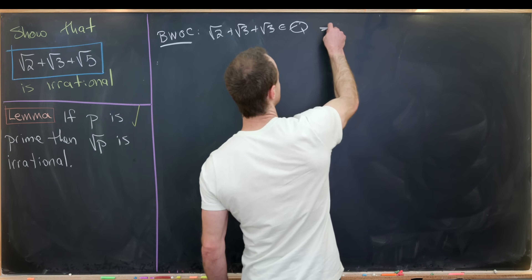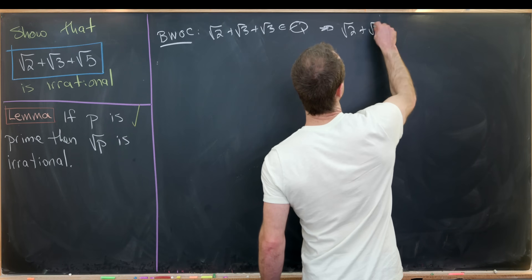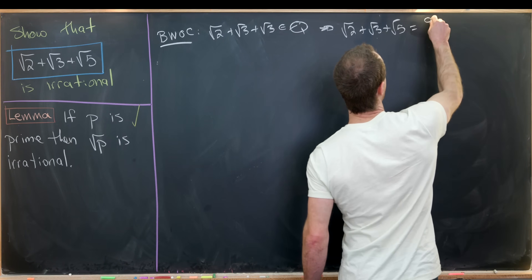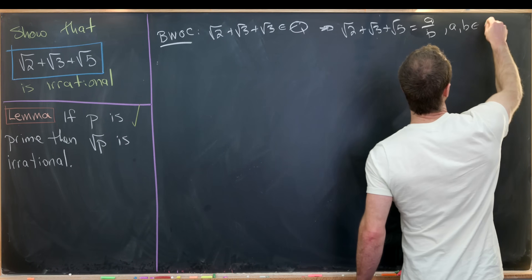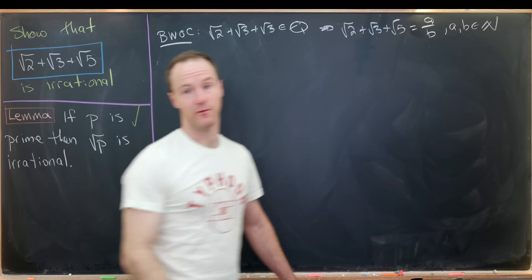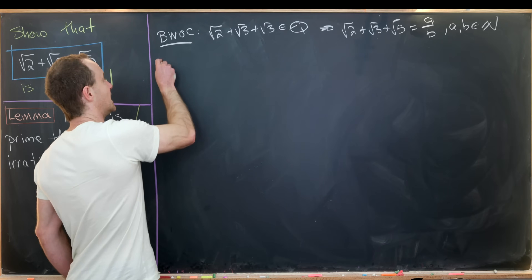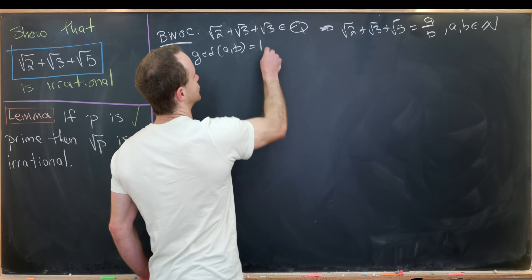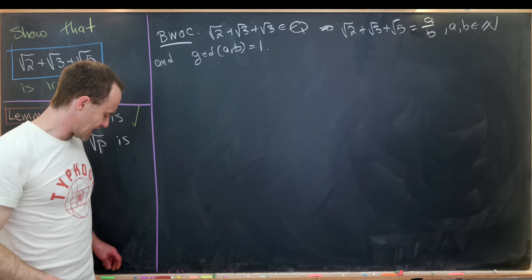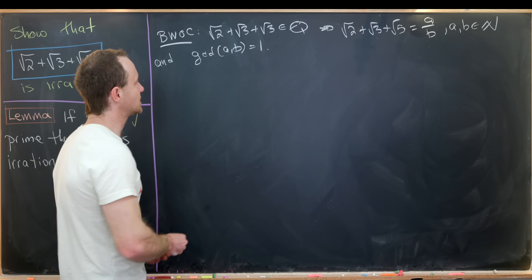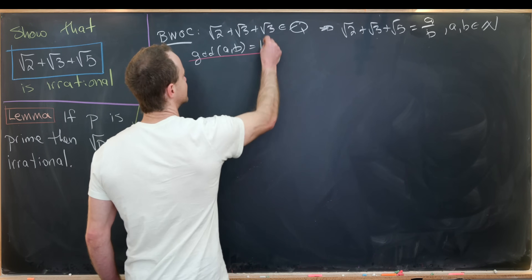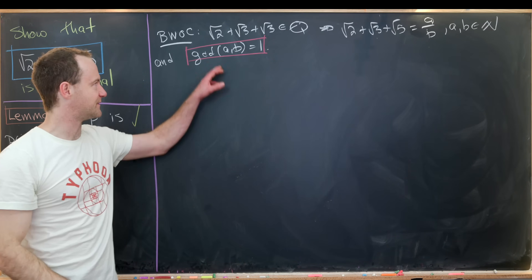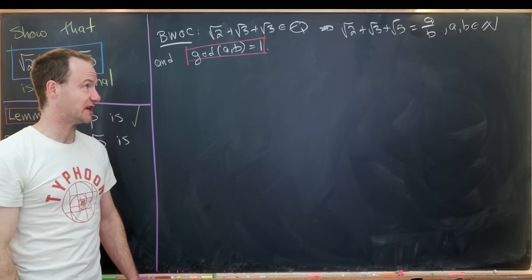If it's rational, we can write it as a over b, so root 2 plus root 3 plus root 5 equals a over b, where a and b are natural numbers — again, it's positive, so we know they're natural numbers — and the GCD of a and b equals 1. It's interesting that as we move through this proof, it's unclear if we're going to need to use this; maybe it's subtly used, but I don't think it is. Post in the comments if you think we actually need this condition.